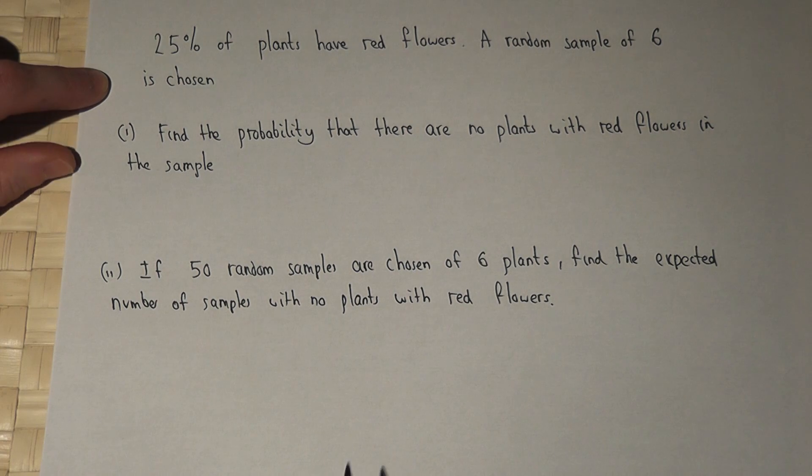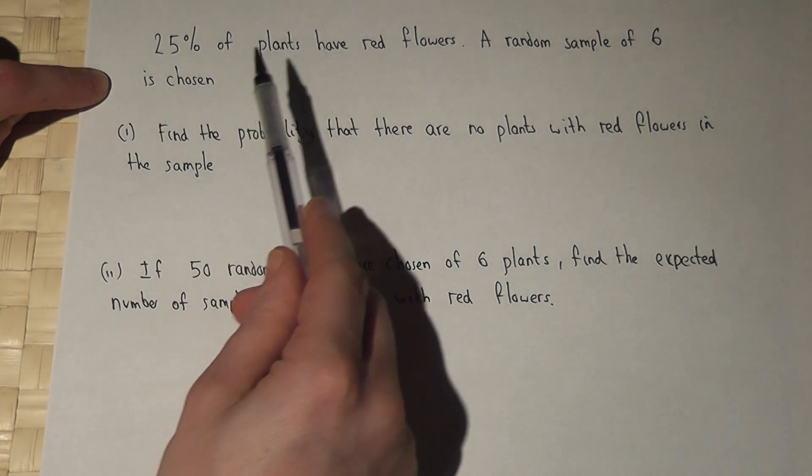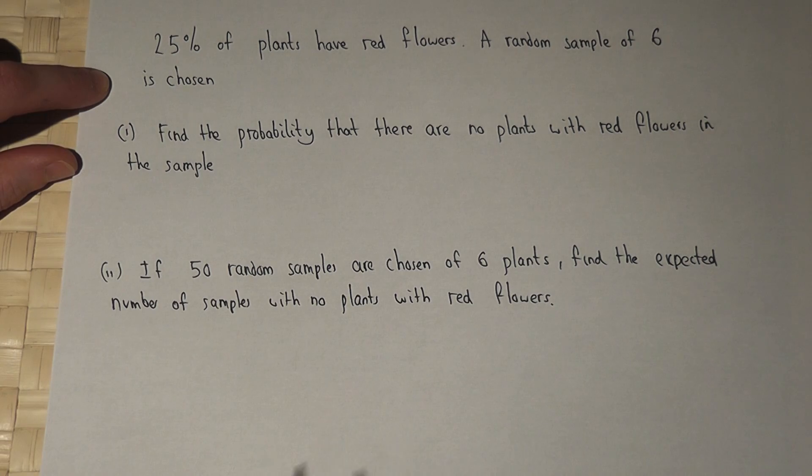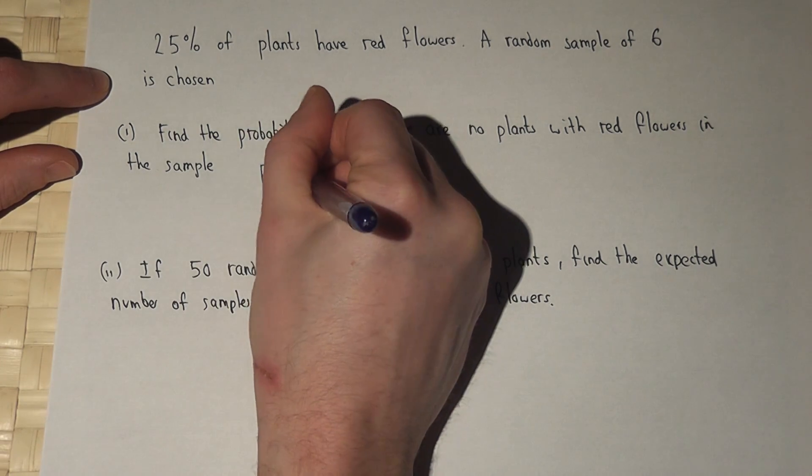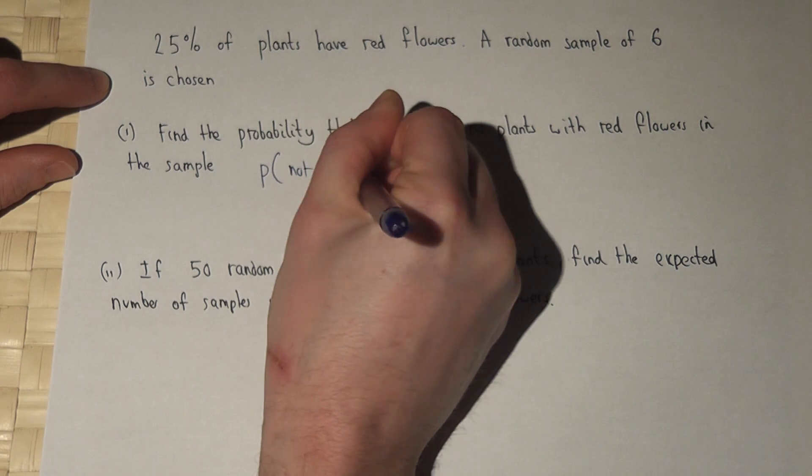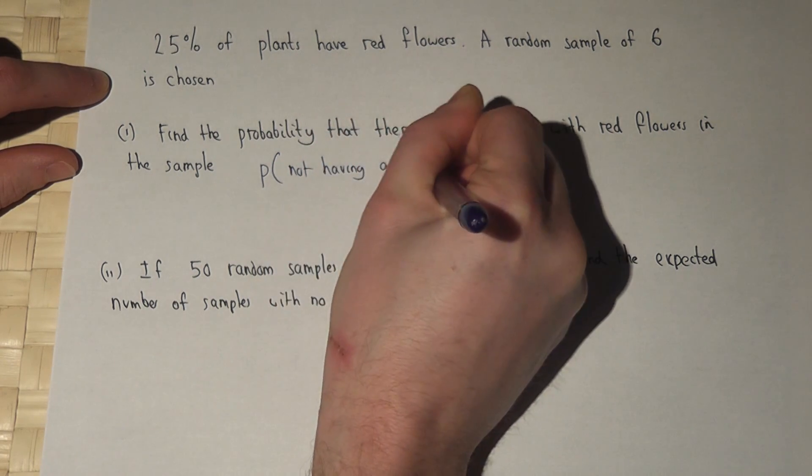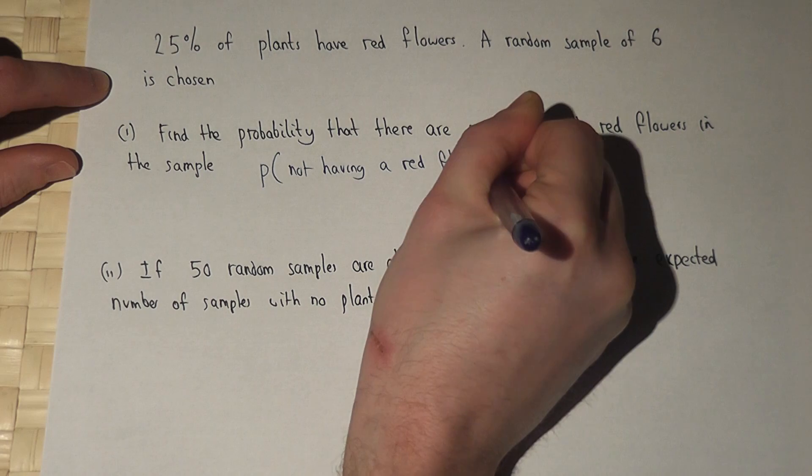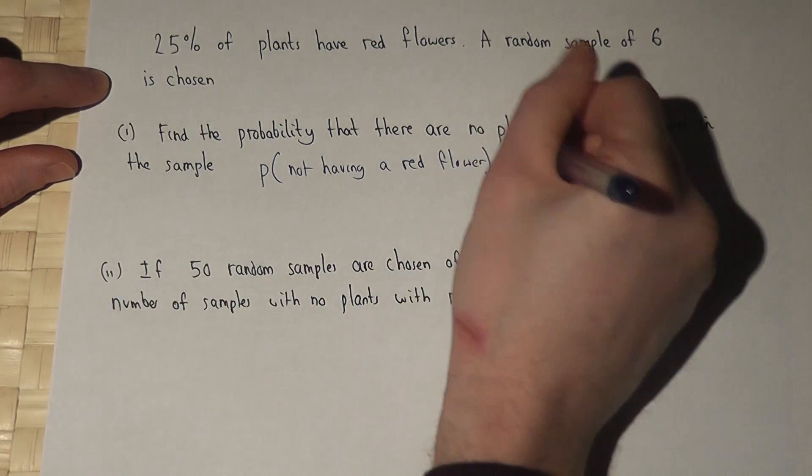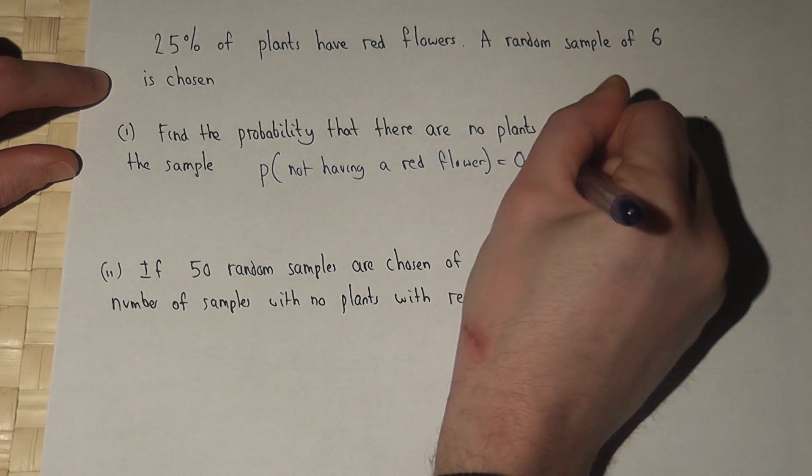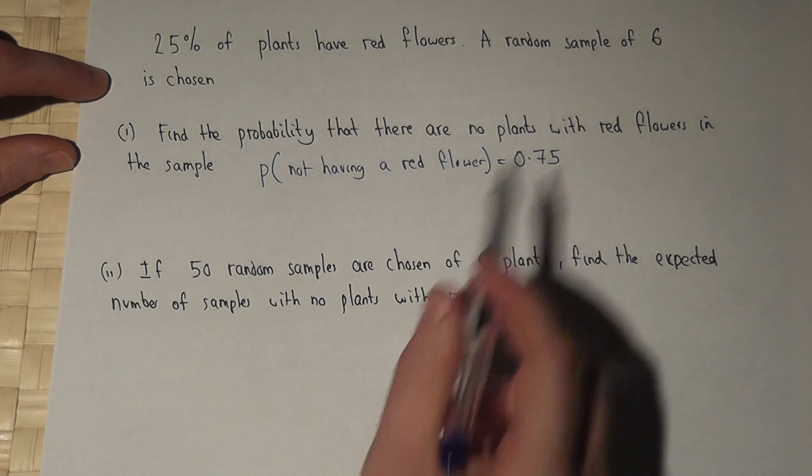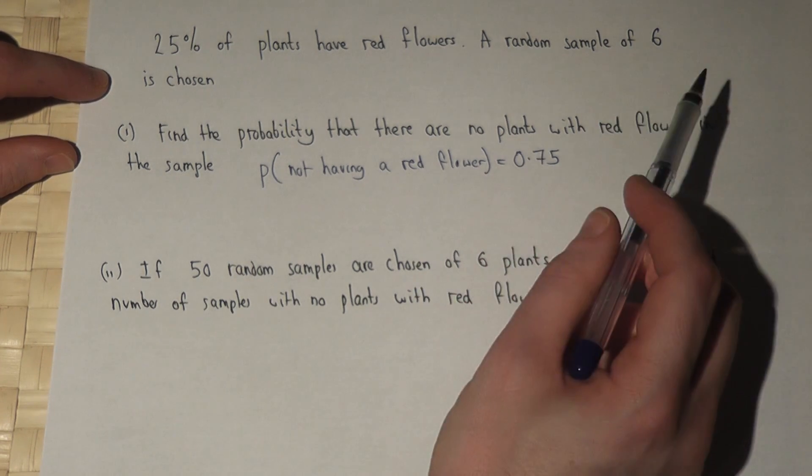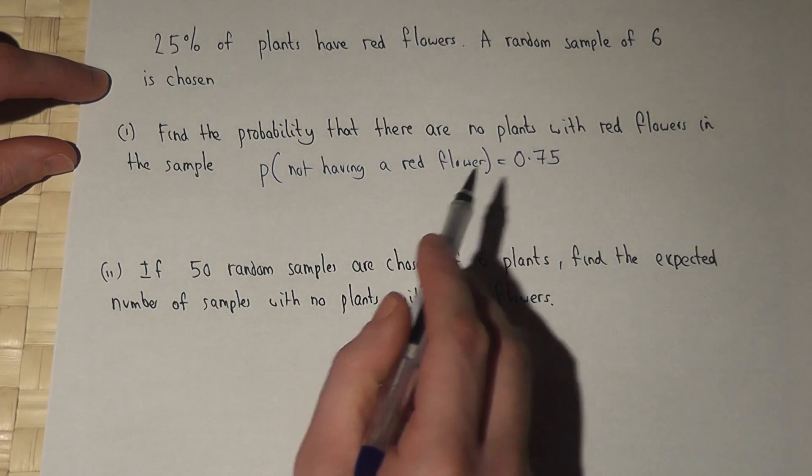The chance of having a red flower is 0.25, so for one flower the chance of not having a red flower equals 0.75. So in a random sample of six, the chance that there are no plants with red flowers is 0.75 to the power of six.